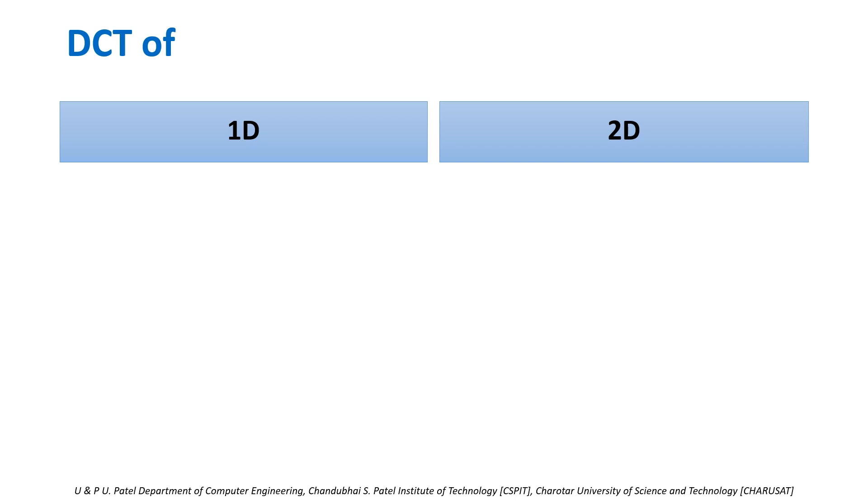DCT of 1D and 2D function. Let f be the 1D function of x, where x is spatial domain coefficient. Its frequency domain representation will be F of u, where u is frequency domain coefficient.